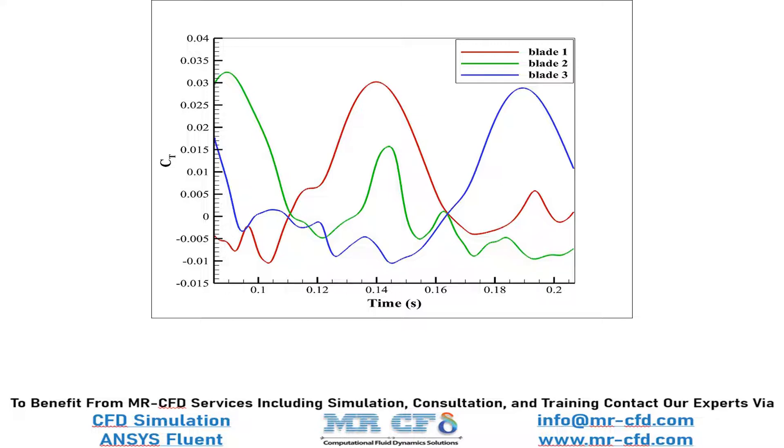When we talked about defining three different reports in the report definition section, the third report was about calculating the moment coefficient over the three different blades of the turbine. This diagram is plotted using the data obtained by that report.